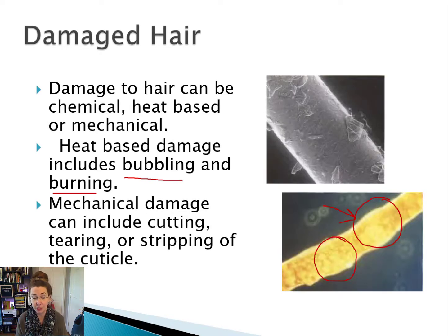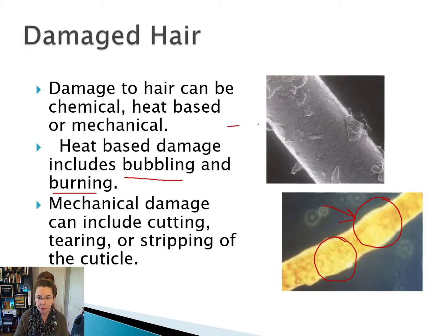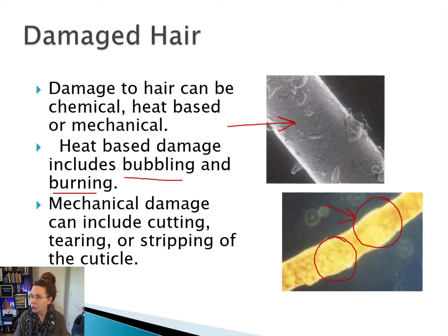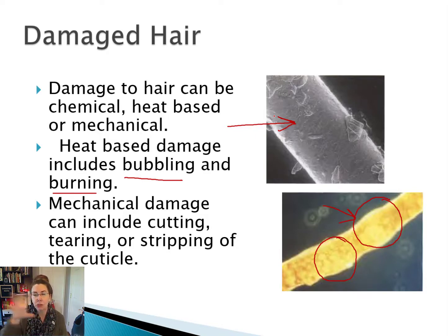Mechanical damage, on the other hand, includes things like cutting, tearing, or stripping of the cuticle. In our top image, this is a cuticle that has been completely stripped. The way that this normally happens is a one-two punch of heat damage causing the cuticle to lift, and then mechanical damage actually ripping the cuticle off of the hair.